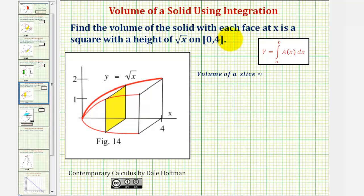We want to find the volume of the solid with each face at x is a square with a height of square root x on the closed interval from zero to four.